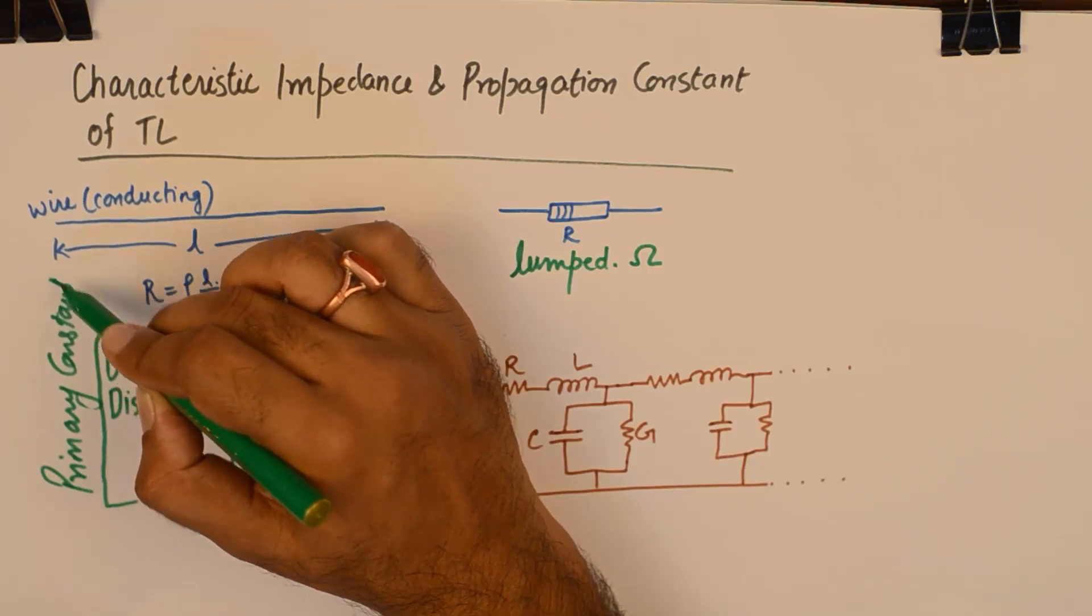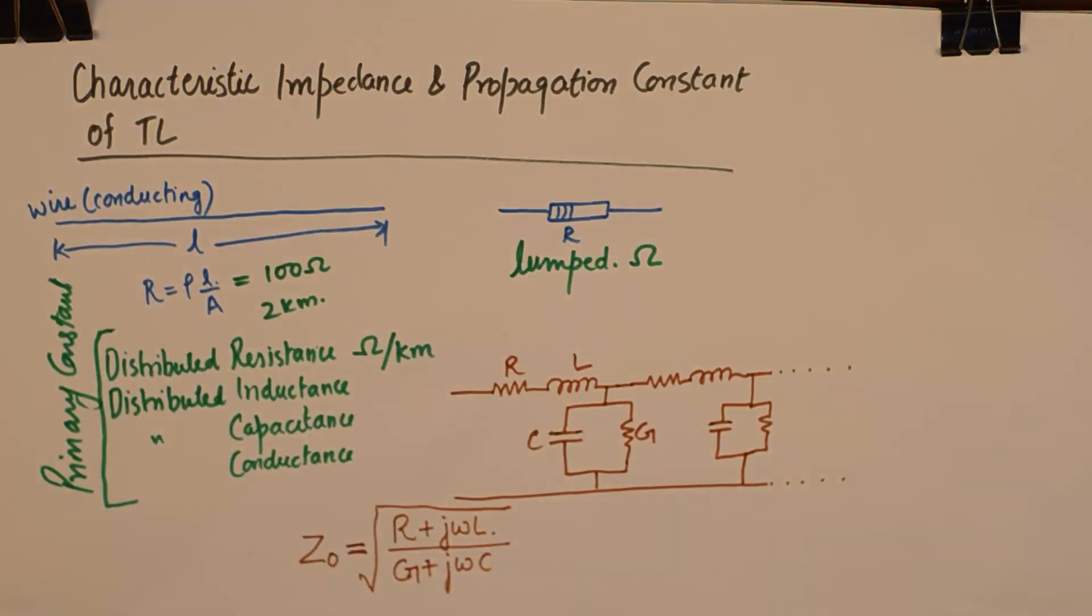So, key point number one: any transmission line will have some primary constants known as distributed resistance per unit length, distributed inductance per unit length, distributed capacitance per unit length, and distributed conductance per unit length. So these R, L, G, and C featured in the characteristic impedance equation are the primary constants.